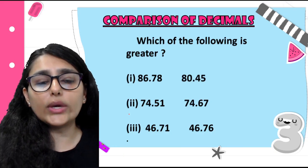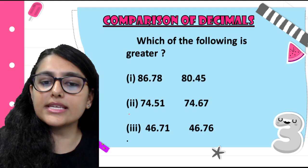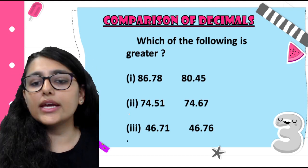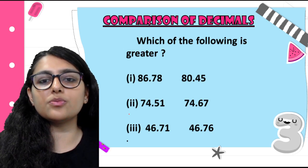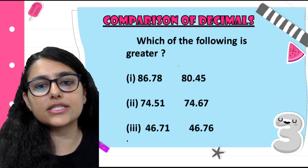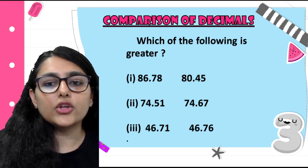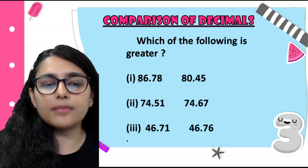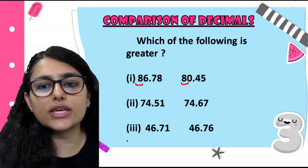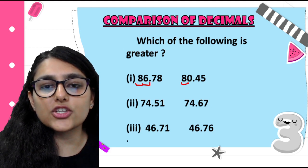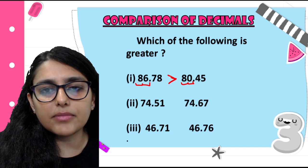Let's move forward. The next topic is Comparison of Decimals. How do we tell which decimal number is bigger and which is smaller? It's very simple — just like we identify greater and smaller whole numbers, we apply the same to decimals. First example: 86.78 and 80.45. We look at the first digit from the left: 8 and 8 are the same. Then we look at the second digit: 6 is greater than 0. So automatically 86.78 is the greater number.